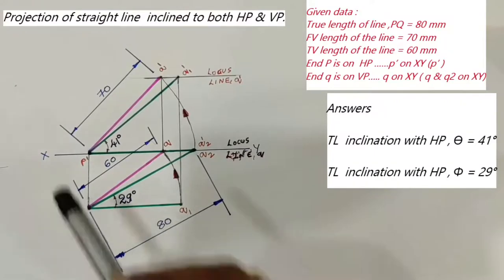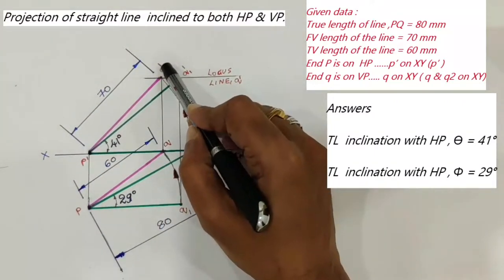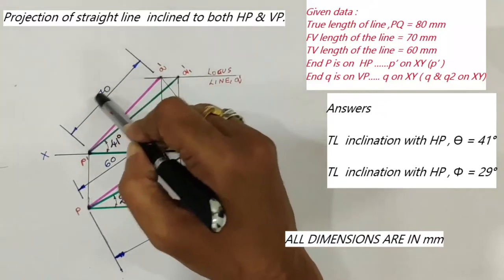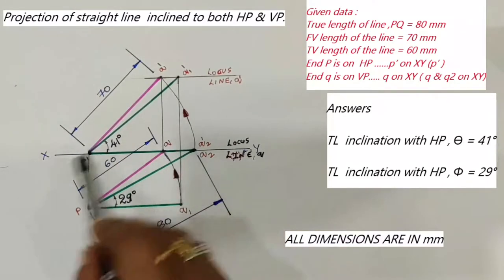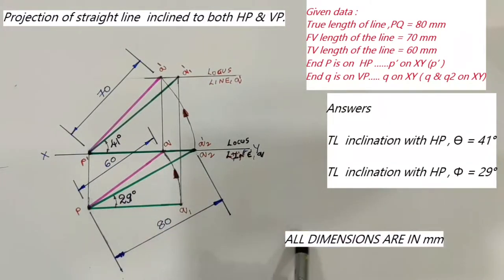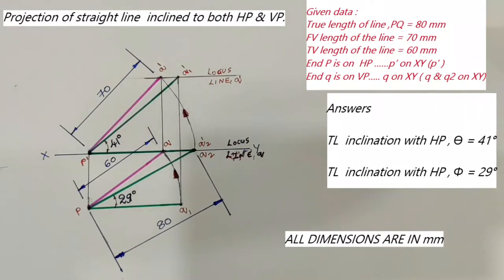P'–Q2' equals 70mm. P–Q is the top view length of the line, which equals 60mm. All these dimensions are in millimeters. Regarding pencil usage: construction lines are to be drawn with a 3H pencil, dimensioning is with a 2H pencil, and the final lines are to be drawn darker than the true length and initial position lines of the front view and top view.